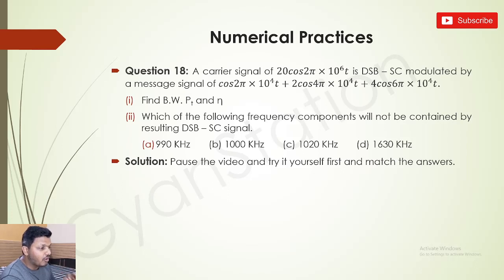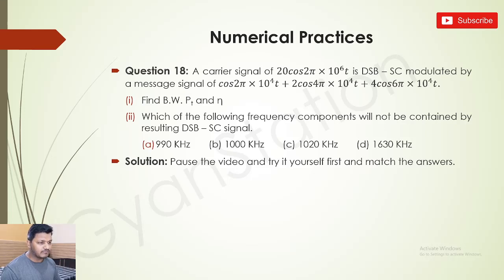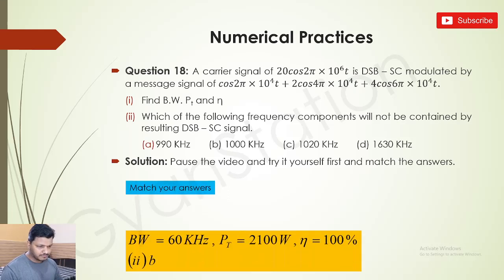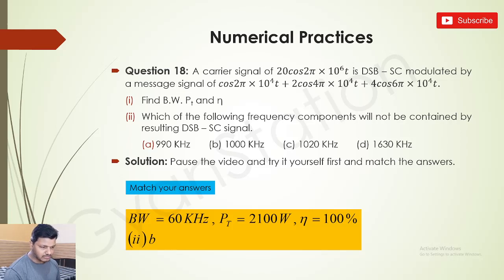The second question asks: which of the following frequency components will NOT be contained by the resulting DSBSC signal? You need to calculate all frequency components: fc, fc±fm1, fc±fm2, fc±fm3 — that gives seven values — and identify which given option is not among them. Pause the video and try it yourself. The answers are: bandwidth = 60 kHz, total power = 2100 W, efficiency = 100%, and the answer to the second question is 1000 kHz.